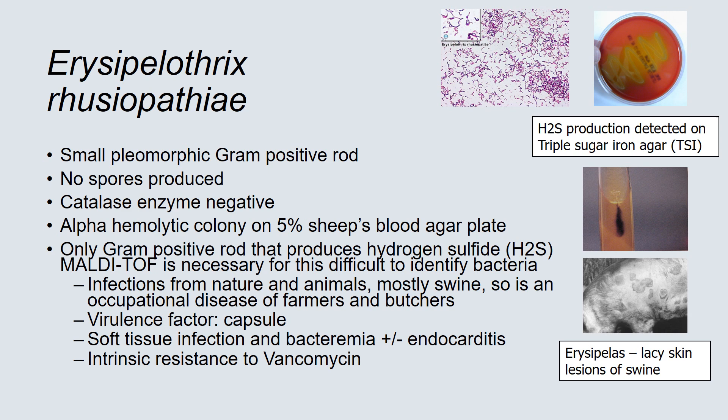Erysipelothrix rhusiopathiae is a small, pleomorphic, gram-positive rod. Notice the alpha-hemolytic colonies on the agar plate. There are no spores produced and it is catalase enzyme negative. It is noteworthy to remember that it is the only gram-positive rod that produces hydrogen sulfide, shown by the black discoloration in a triple sugar iron agar.